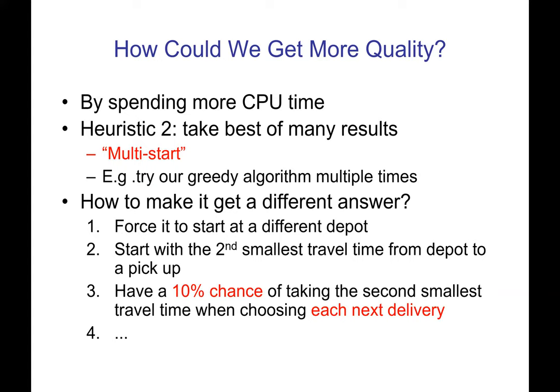There are libraries to give you random numbers, and you can use that to have the program 90% of the time make one decision and 10% make a different decision. Every time you went through your algorithm, you'd have some chance of making a different decision, getting a different answer. Somehow add randomness or different starting points to the algorithm so that it comes up with different answers the more times you run it.